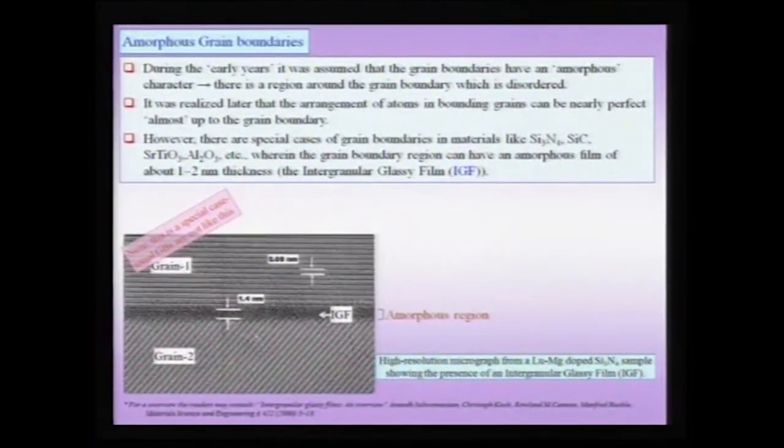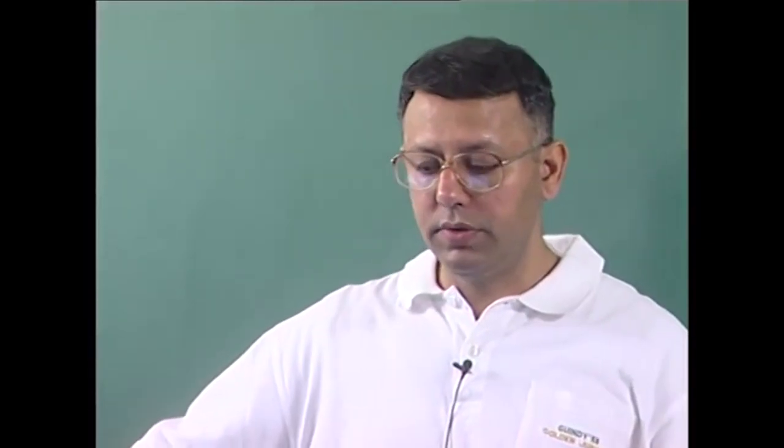As I pointed out, a mental picture often carried by many people is that a grain boundary is a region of disorder. However, as we have noted by looking at some grain boundaries, this is often not true — there could be an order in the grain boundary. Of course, this order could be very different from the order present in the bulk of the crystal, but there are special cases where the grain boundary region is totally amorphous or glassy.